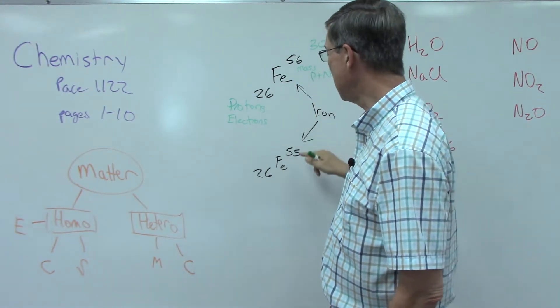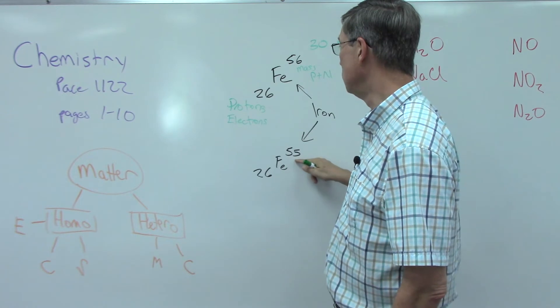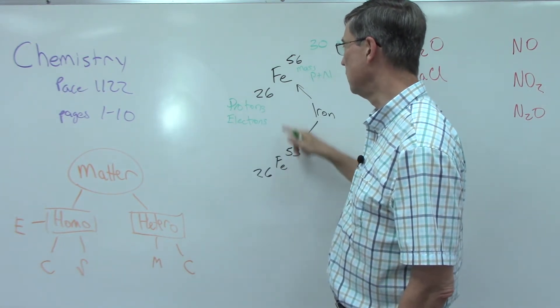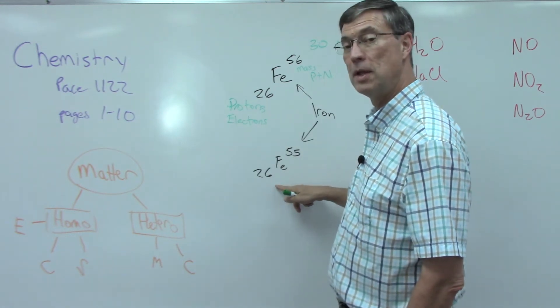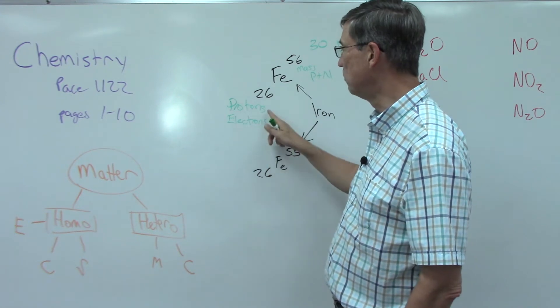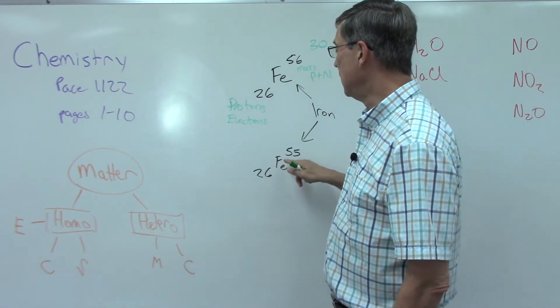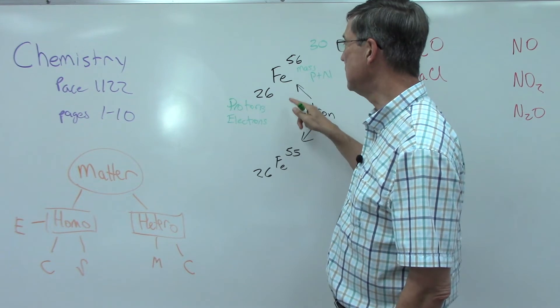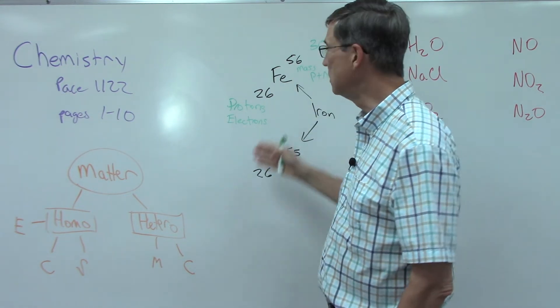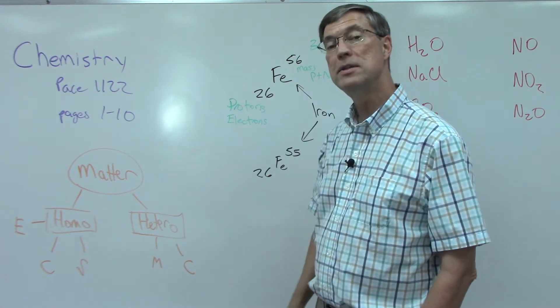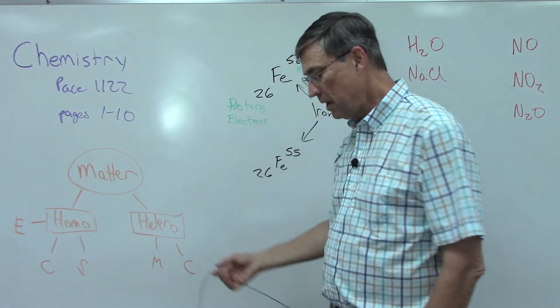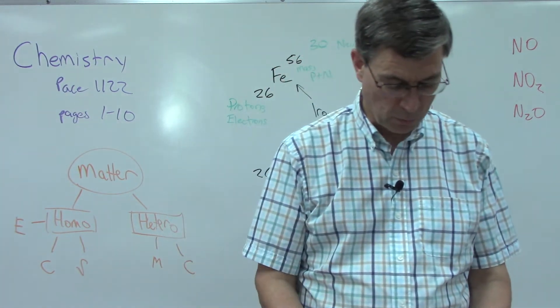Now what if I took away a neutron and I just had 29 neutrons plus the 26 protons? Then I would have a mass of 55, still iron, because we still have an atomic number of 26, and that's the number of protons. When we have two atoms that have a different number of protons, therefore a different mass, we say that these are two different isotopes.